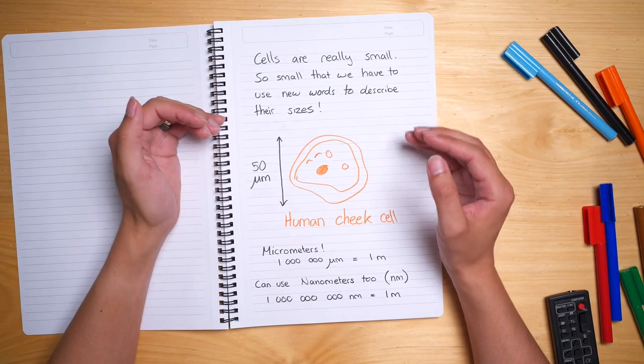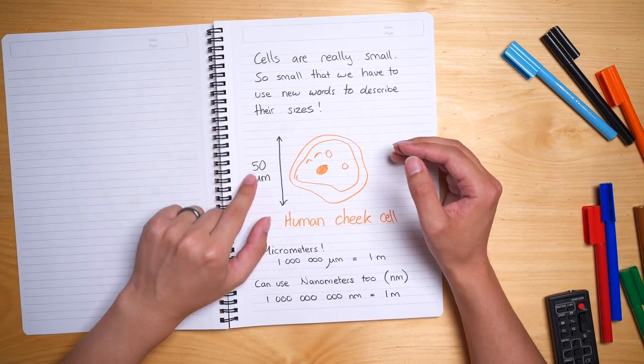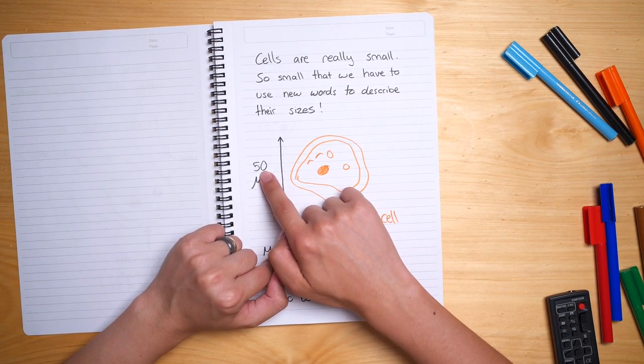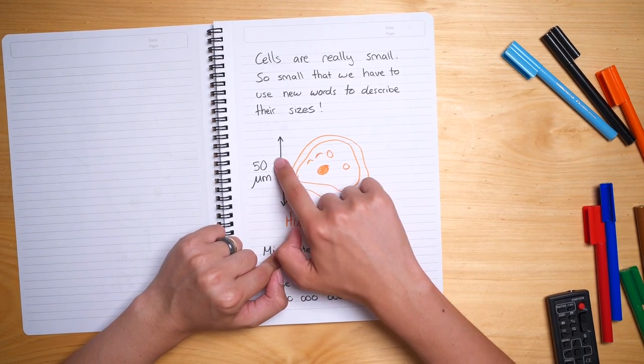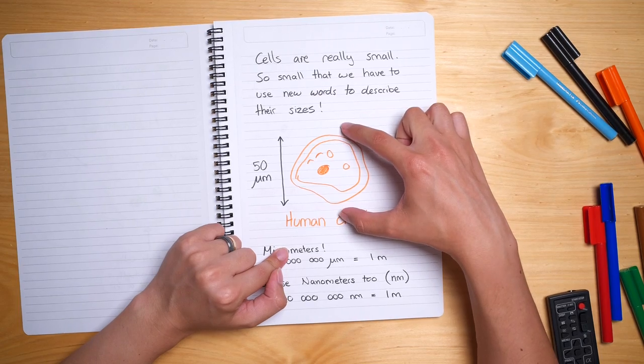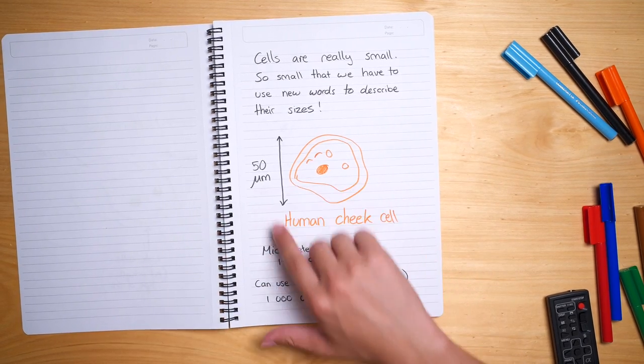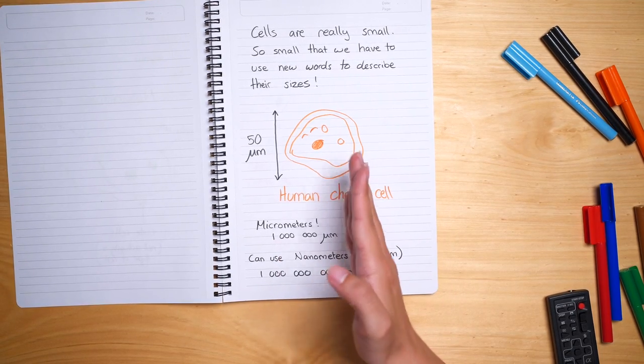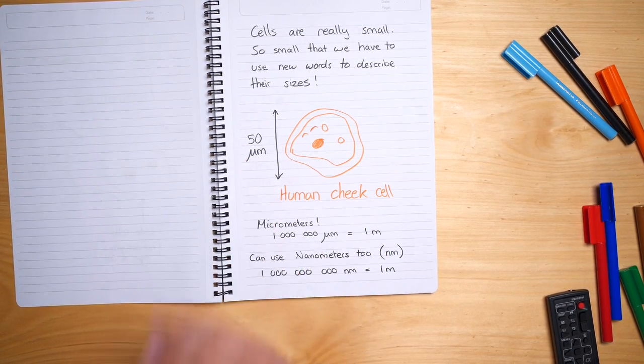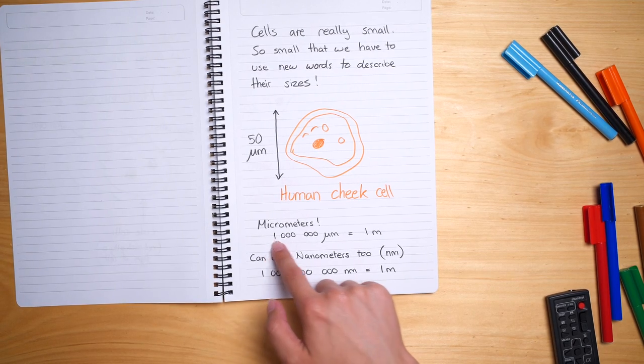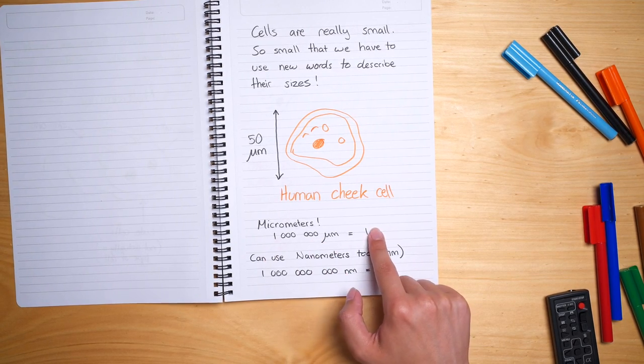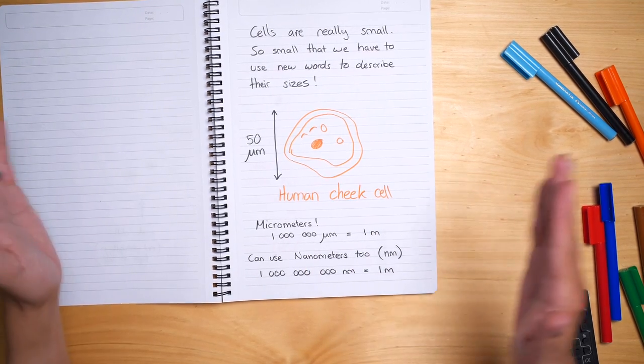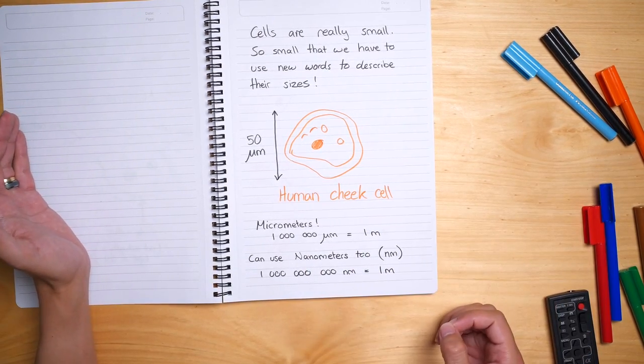Well, we use a different one called micrometers. This one here I've drawn a quick cell, it's a human cheek cell, and it is 50 micrometers in diameter, from here to here. A micrometer is much smaller than a meter. So if you can imagine meter, centimeters, millimeters, micrometers. A micrometer is one millionth of a meter. That means if I got a million of these it would add up to one meter in length. Can you imagine that? A meter ruler and you cut it up into a million pieces. Very tiny.